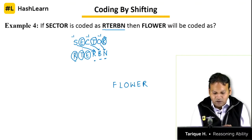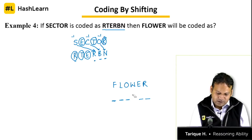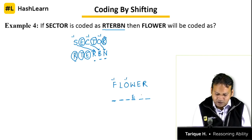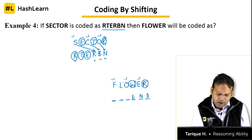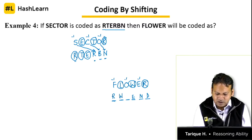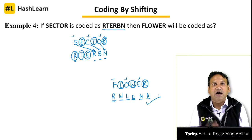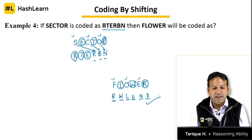Applying to 'flower' — F, L, O, W, E, R with 6 letters total. F minus 1 is E, O minus 1 is N, E minus 1 is D — these are the shifted letters. The remaining three letters W, L, R go in the other positions. So the code for 'flower' is R, W, L, E, N, D. If 'sector' is coded as RTERBN, then 'flower' will be coded as RWLEND.